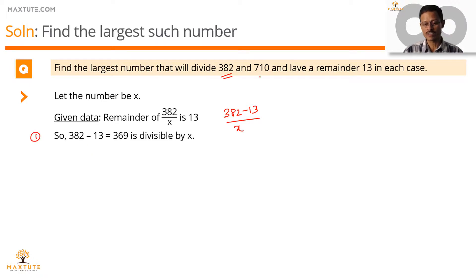Let's quickly draw a second inference for the second number. 710 divided by x, the remainder is 13. So, 710 minus 13, 697 is divisible by x. This is the second inference.